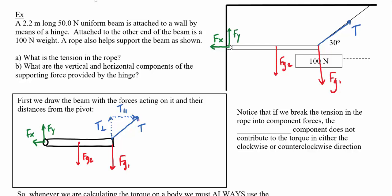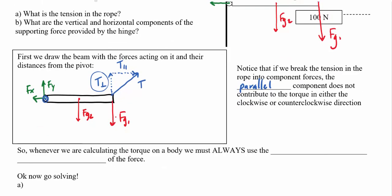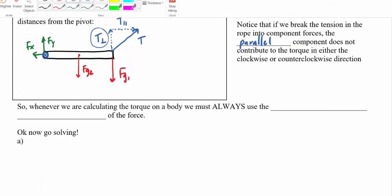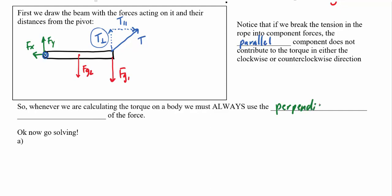The parallel component of tension does not contribute to torque in either the clockwise or counterclockwise direction. If you pull directly along the beam, that has no net torquing effect around the pivot. So when calculating net torque, we must always use the component of force that is perpendicular to the beam.